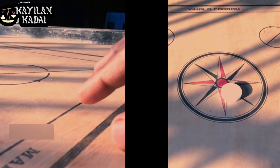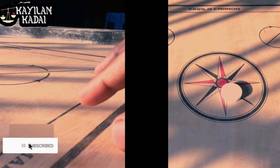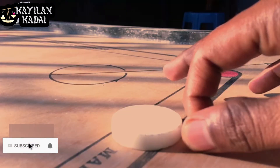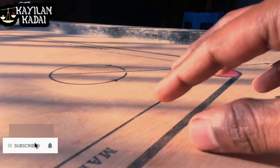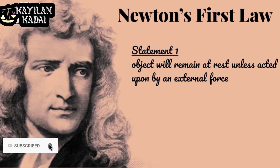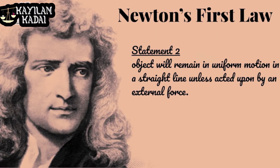Newton's first law has two statements. Statement number one: an object will remain at rest unless acted upon by an external force. Statement number two: an object will remain in uniform motion in a straight line unless acted upon by an external force.